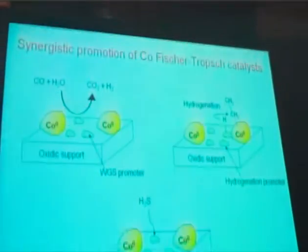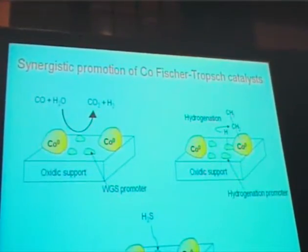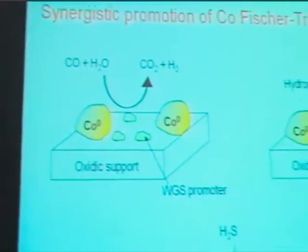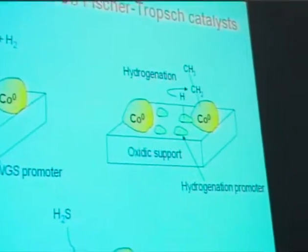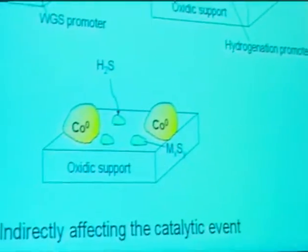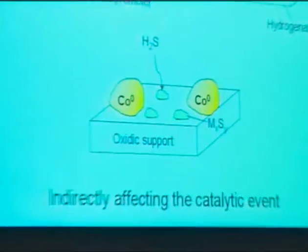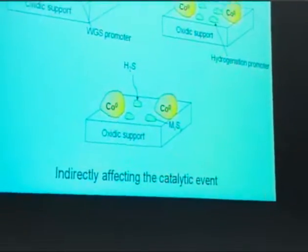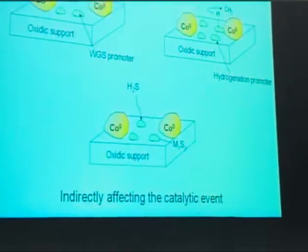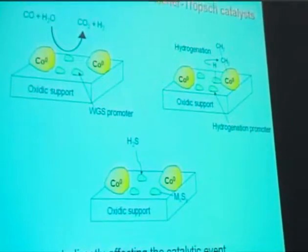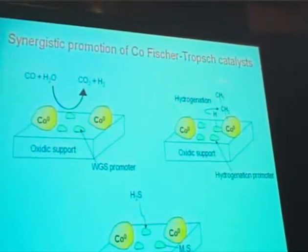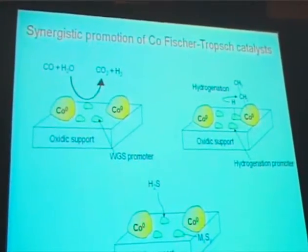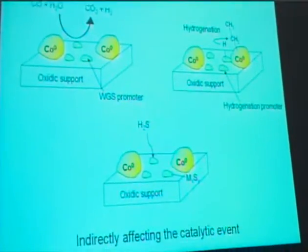A last group of promoters does not directly influence the active metal, but does so in another way. For example, a metal oxide can catalyze the water-gas shift reaction, and in that respect influence the overall Fischer-Tropsch process. It can also influence hydrogenation, or for example, can absorb H2S in the stream.